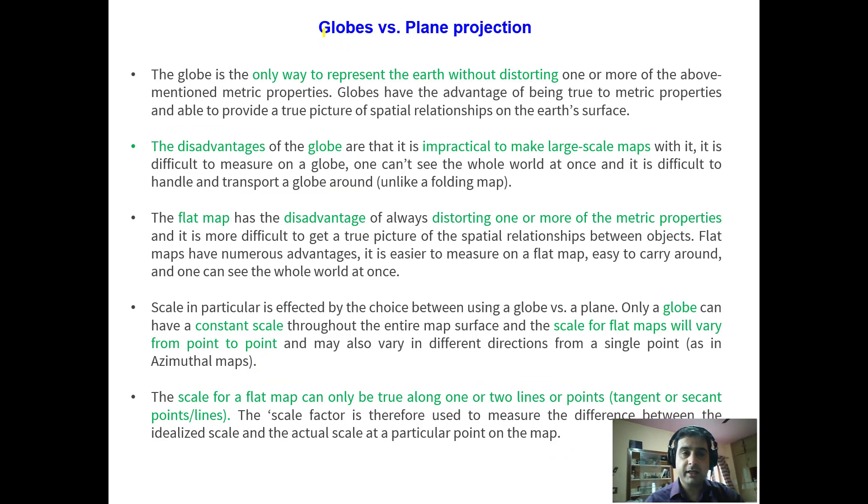So how can we make a comparison between globes versus plane projection? The globe is the only way to represent earth without distortion. The earth as it is, it is without distortion. Now if you want to convert it into a different projection, the distortions are going to come. The disadvantage of the globe is only that it is impractical to make large scale maps. We cannot have a bigger size globe to represent the actual area.